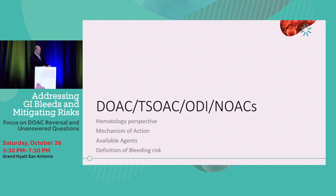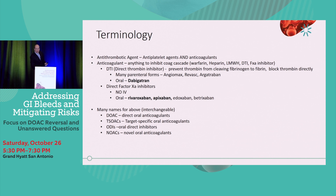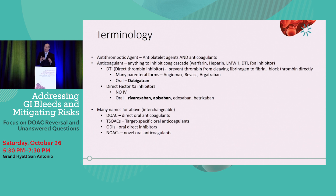It's important to focus on terminology first. There are antithrombotic agents, which include antiplatelet agents and anticoagulants. The antiplatelet agents are aspirin, Plavix, and other drugs that inhibit platelet aggregation. The anticoagulants are warfarins, heparins, and the oral anticoagulants we're talking about today. An anticoagulant is anything that acts to inhibit the coagulation cascade — warfarin, heparin, low-molecular-weight heparin, direct thrombin inhibitors, and factor Xa inhibitors. These are the two DOAC classes: DTIs, or direct thrombin inhibitors, and the direct factor Xa inhibitors.